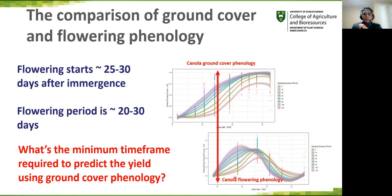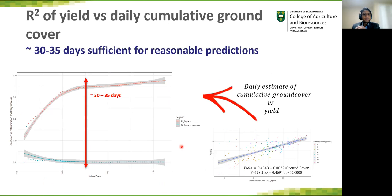The comparison of ground cover and flowering phenology shows flowering starts somewhere around 25 to 30 days after emergence and lasts 20 to 30 days. In total, roughly 60 days or more are required to predict yield based on flowering. The question then is: what is the minimum timeframe required to predict yield using ground cover? We estimated the coefficient of determination between yield and daily cumulative ground cover to determine this minimum timeframe. The results suggest 30 to 35 days is sufficient, considering the R-squared plateaus after that specified date range.